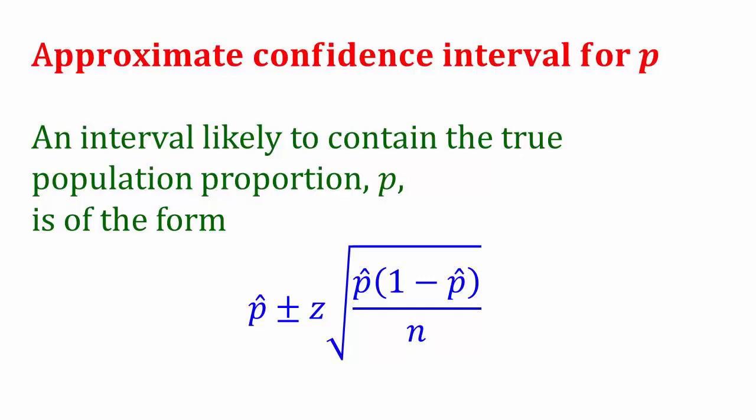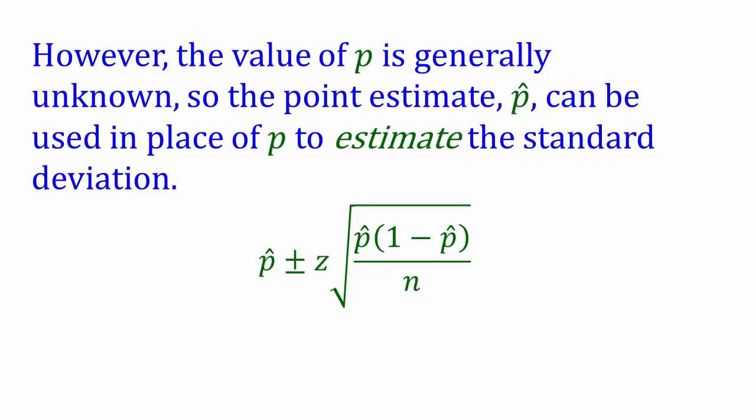The standard deviation of p hat provides an indication of the precision of the point estimate for a particular value of p. If we have a small standard deviation, it is more likely that p hat is going to be near the center and therefore more likely that it's going to be close to p. However, in practice, the value of p, the true population proportion, is generally not known. If the researcher already knew the proportion of people who were in favor of the proposal, he wouldn't have to conduct the survey.